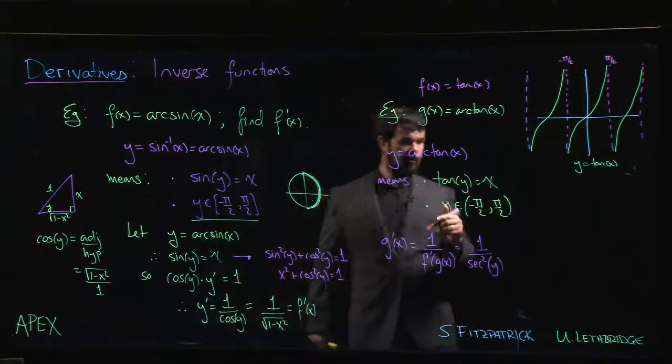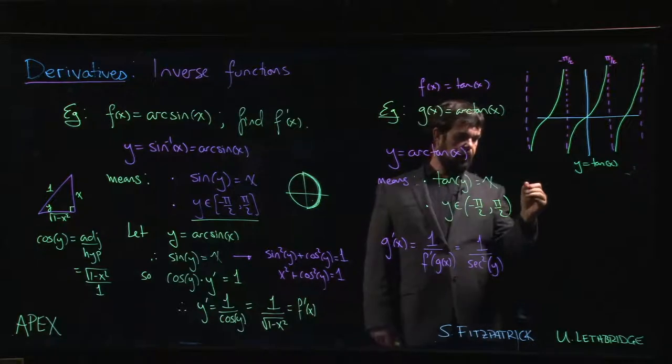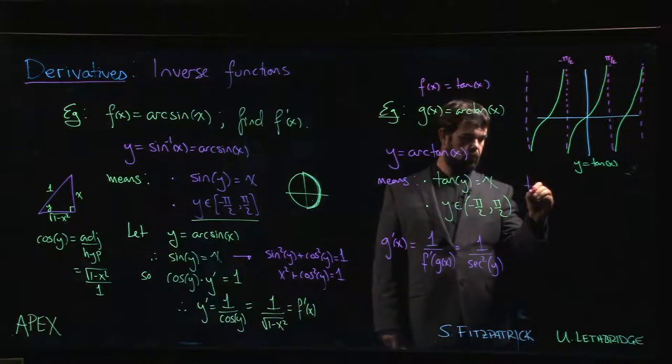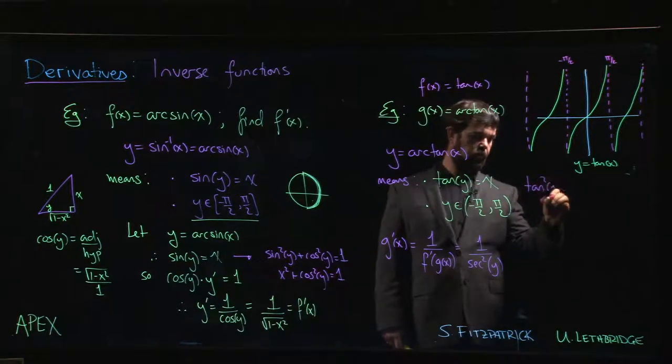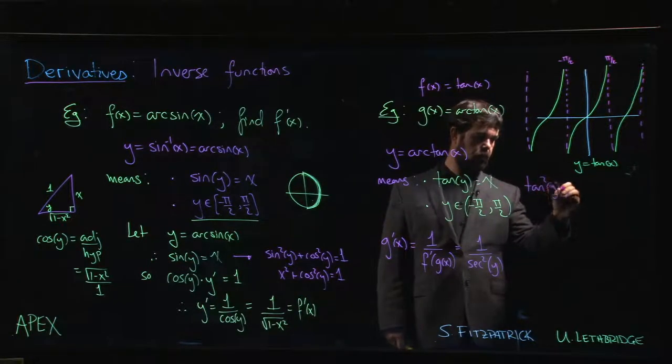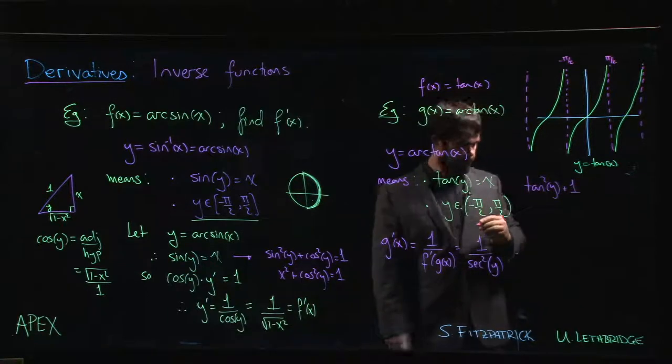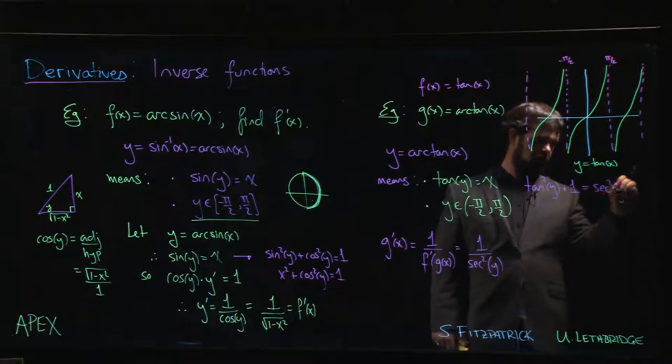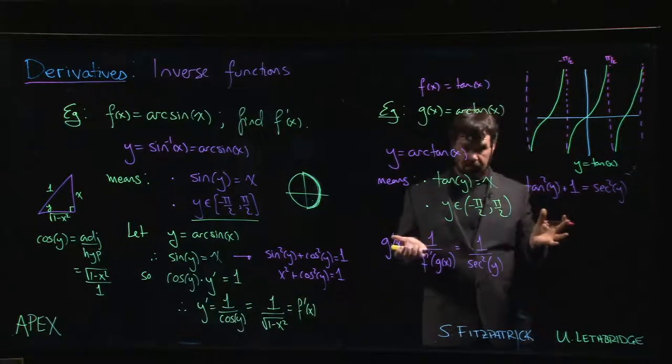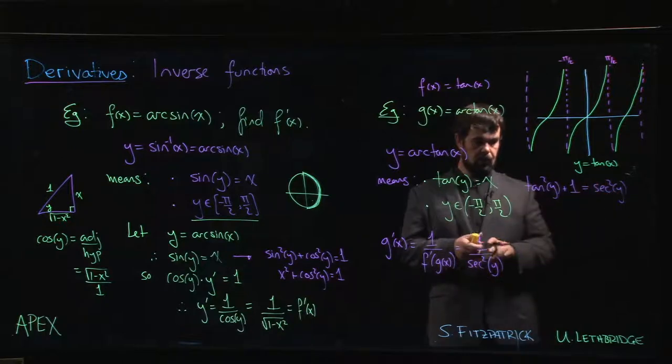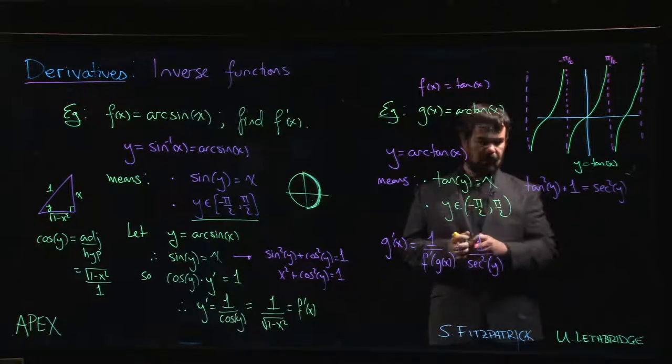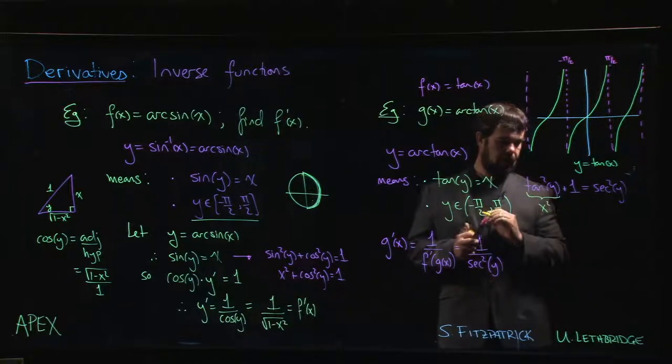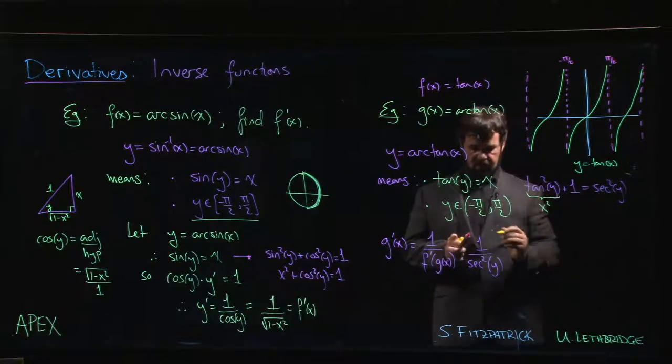Well, tan y is equal to x. Now remember that we know that tan squared y plus 1 is equal to secant squared y. That's an identity that we have. And tan y is x, right? So this is just x squared plus 1 is secant squared.